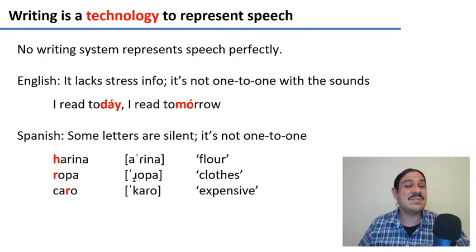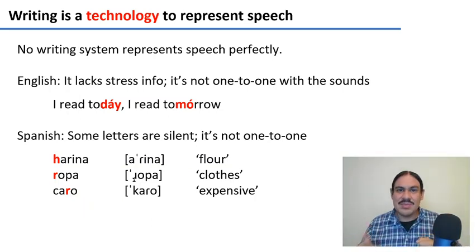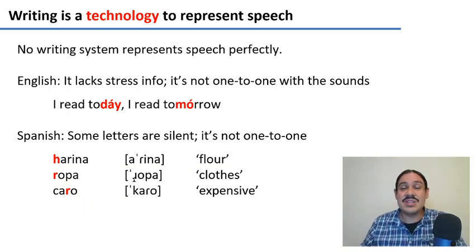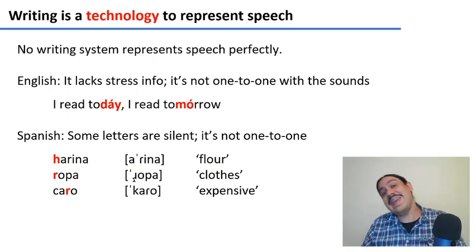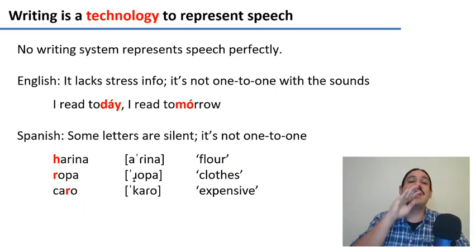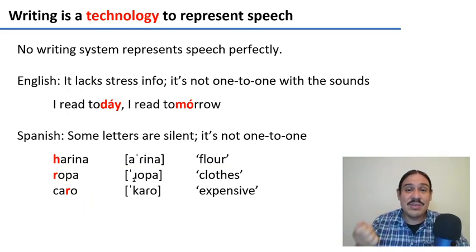If anything, writing is something like a technology. All writing systems are used to represent speech, and none of them represent speech perfectly. For example, in English we don't mark stress — we don't have special marks to tell you whether a word is stressed today or tomorrow. You have to learn that from memory and retrieve it when you see the graphic forms.